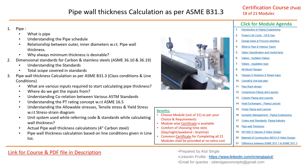This presentation covers pipe wall thickness calculation as per ASME B31.3, the process piping code. The agenda includes: what is pipe, pipe schedule, the relationship between outer and inner diameters and wall thickness, and why minimum thickness is always desirable. We'll also look at ASME B36.10 for carbon steel and stainless steel dimensions before moving into actual B31.3 calculations for both class and line conditions.